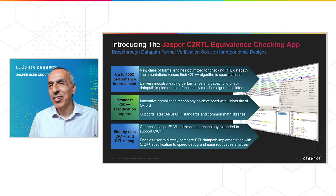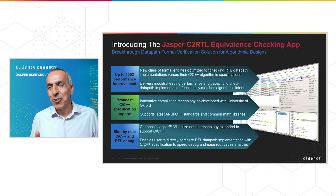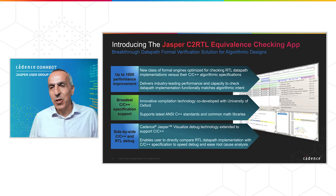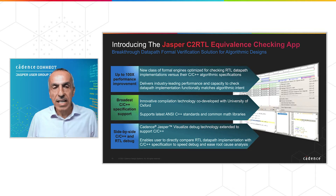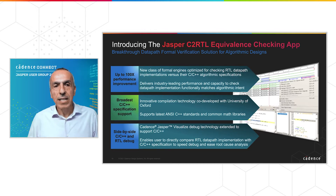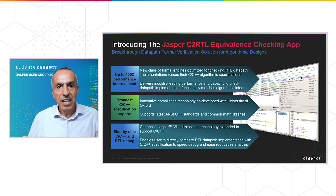It's with great pleasure we are officially announcing our Jasper C2RTL app today. We first talked about this at JOG two years ago, but after much work with our early customers and partners, this breakthrough solution for verifying algorithmic designs is ready to go. Our Jasper C2RTL equivalent checker app delivers three major things: scalability, support of C/C++ specification languages, and usability and debug.